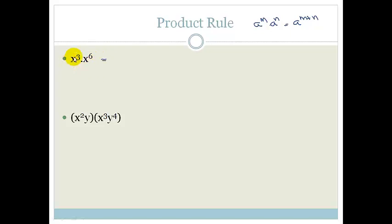Very easy. We've got x cubed times x to the 6. So what do we do? We just add the indices. That's x to the 3 plus 6, which is 9.